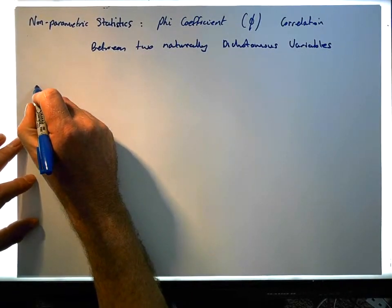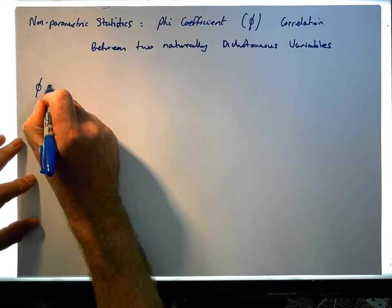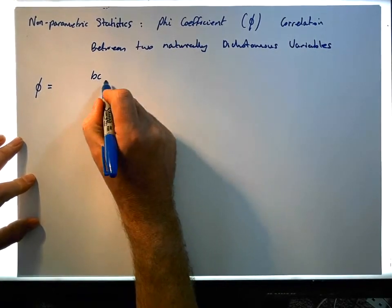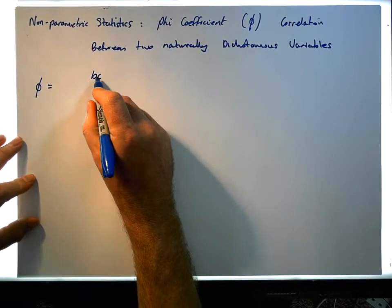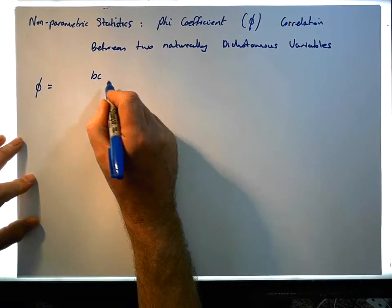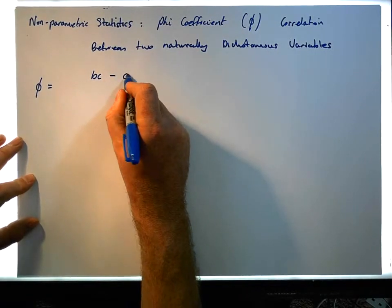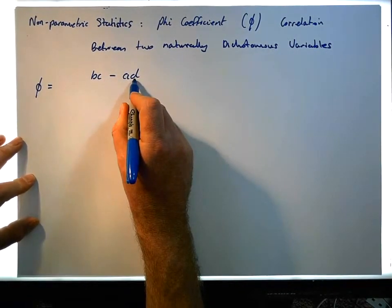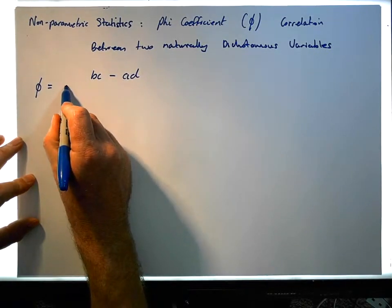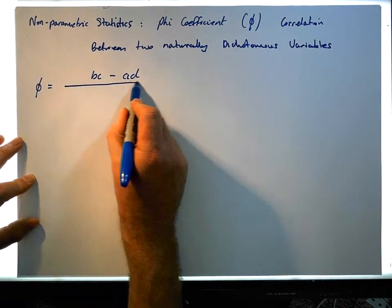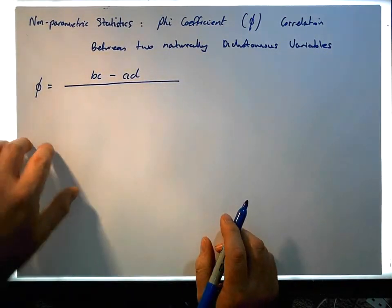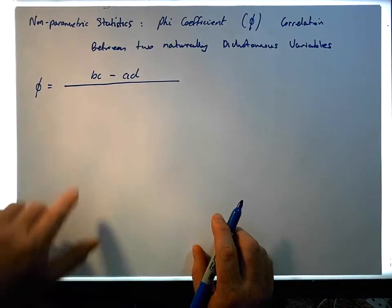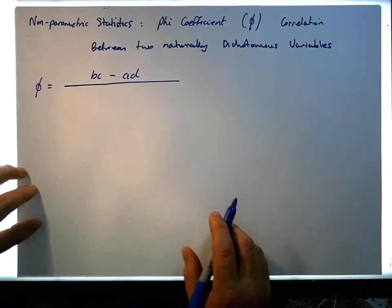The symbol is phi, and it's equal to BC minus AD — that is, the product of the frequencies in cell B times cell C, minus the frequencies in cell A times cell D — divided by the square root of the summations of the columns and rows within the table.